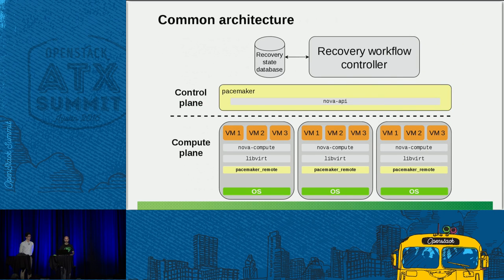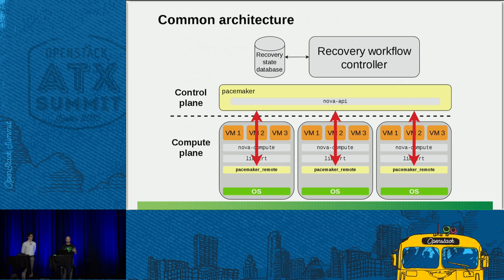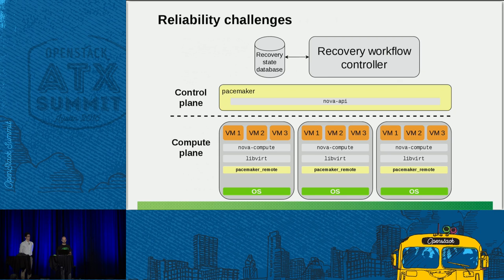The scalability issue is actually solved by a fairly new feature of Pacemaker called Pacemaker Remote. This is an extension that allows you to run a proxy daemon on the compute nodes, which can then be controlled by the core Pacemaker cluster. You can run any resources on the compute nodes and they're controlled, monitored, and managed by Pacemaker in the normal way, but the full-mesh connections stay within the control plane. This can scale very far out.